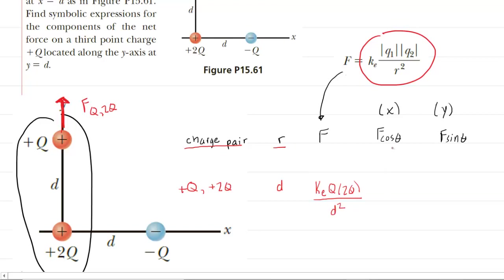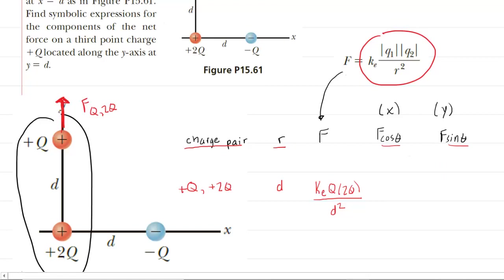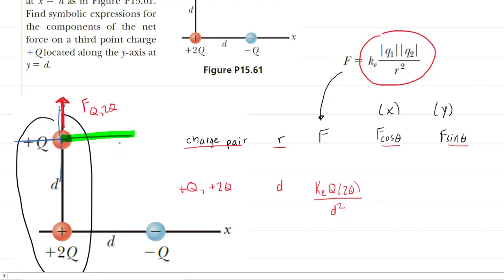Next, we're going to find the X and Y components. To do that, you simply take your force and multiply it by either the cosine or the sine of an angle. We can return back to the figure and superimpose a Y axis and X axis on that charge. We can see that the angle, measured from the positive X axis — which is what we should always do — is a 90 degree angle in this case.